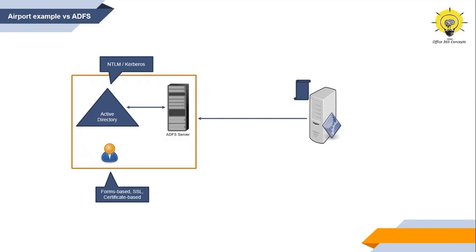When ADFS issues a token to an application, it signs the token using the token signing certificate. The application integrated with ADFS also has your ADFS server's token signing certificate, which is used by the application to decrypt the token. You may wonder how the application has access to this token signing certificate — the answer is federation metadata. This is something we will discuss in a future video, but for now just understand that the application uses the token signing certificate to decrypt the token issued from the ADFS server.